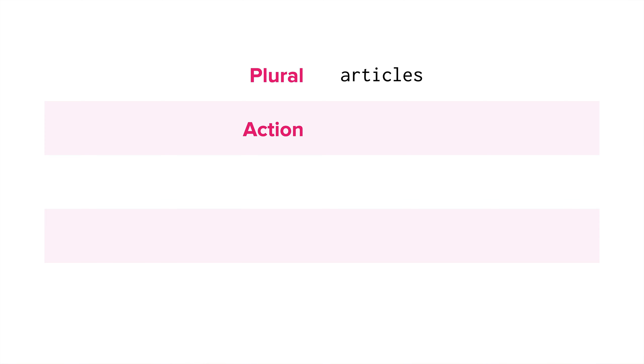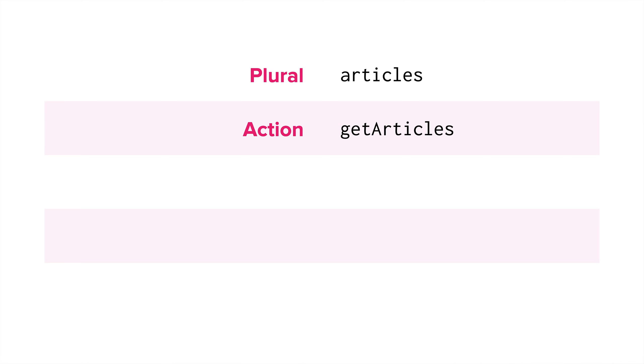Moving on to action-based queries such as 'getArticles', these queries indicate that the aim is to retrieve something without any side effects. It's worth noting though that this can be seen as redundant, since by nature GraphQL queries are often used to fetch data.